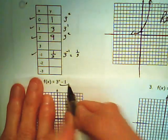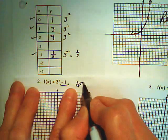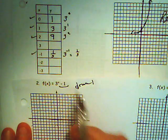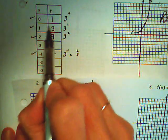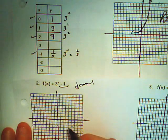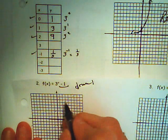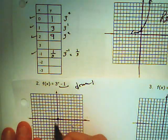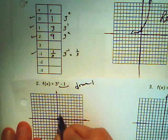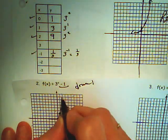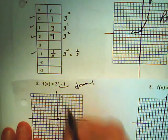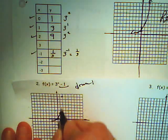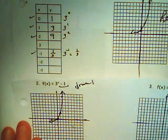If you have a negative 1 on the end, this is going to shift the graph down one unit. So I'm going to take my points and move them down one. (0, 1) shifted down one; (1, 3) shifted down one; (2, 9) shifted down one. Remember the shape? That's what you have.